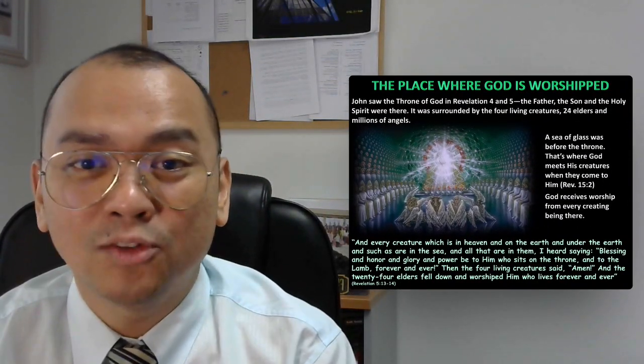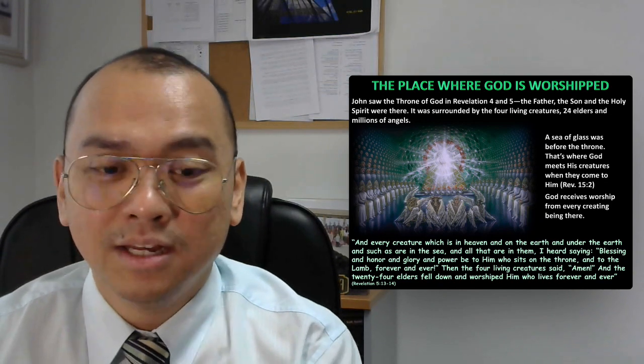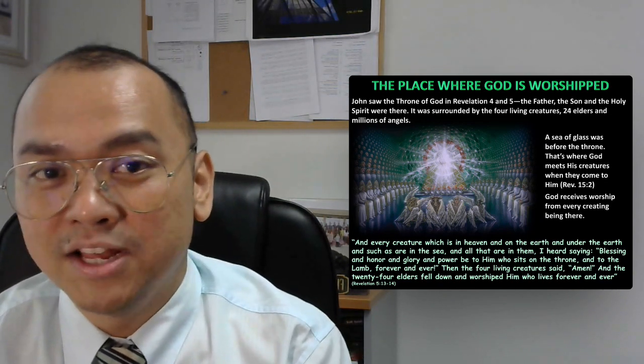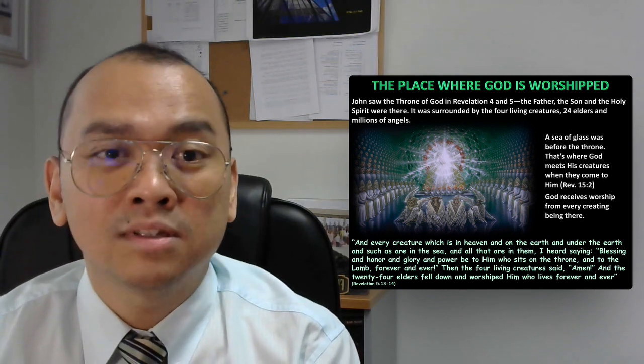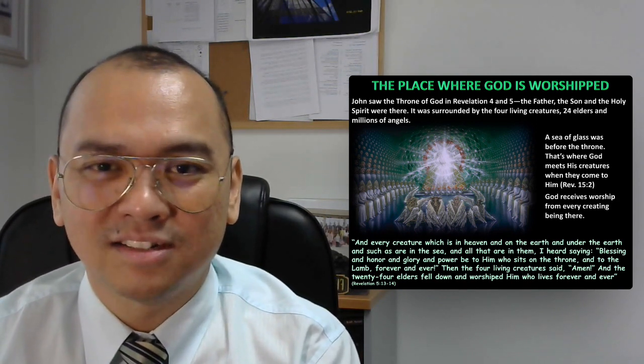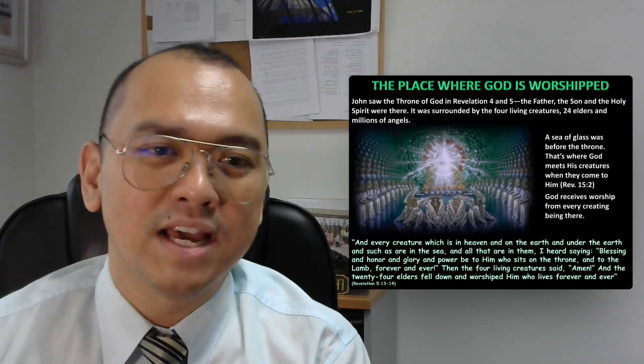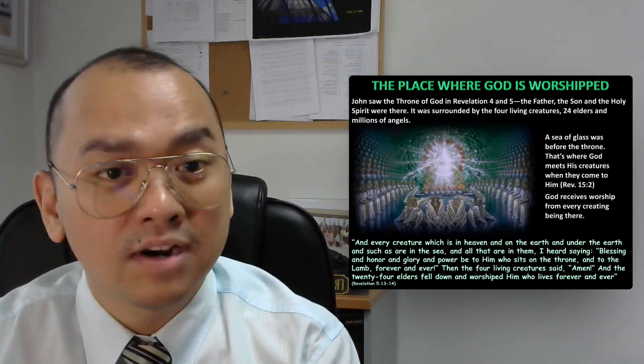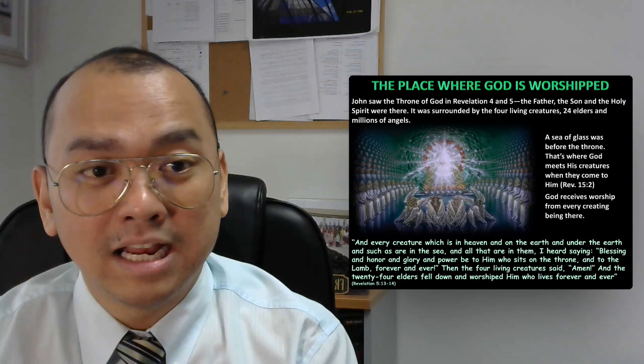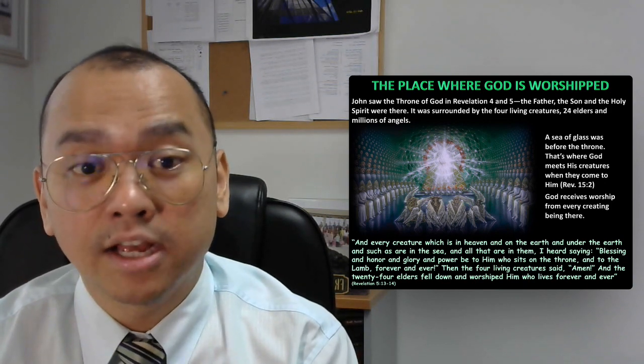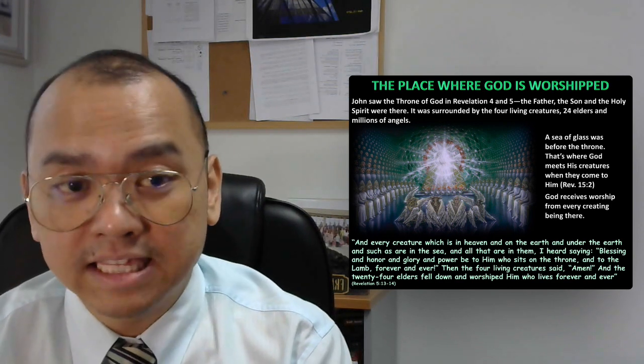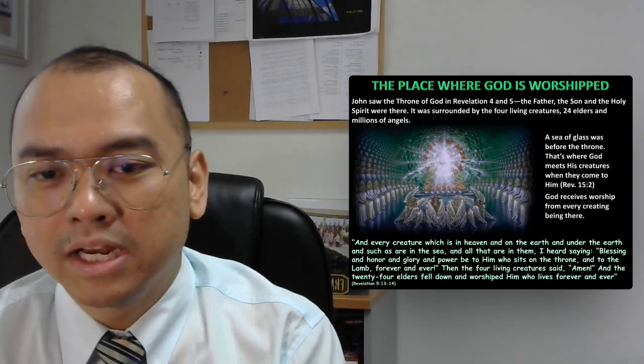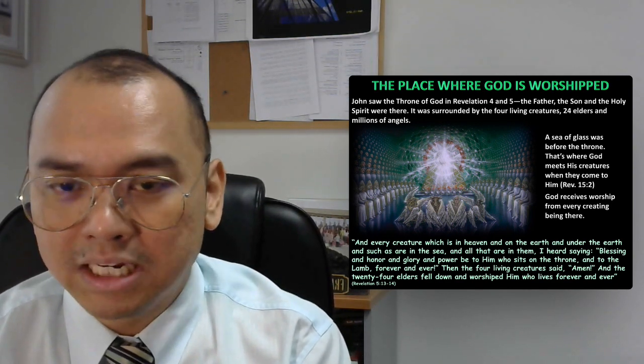The heavenly sanctuary is also the place where God is worshipped. John saw the throne of God in Revelation 4 and 5. The Father, the Son, and the Holy Spirit were there. It was surrounded by the four living creatures, the 24 elders and millions of angels. In Revelation 15, verse 2, we can see a sea of glass was before the throne. That's where God meets His creatures when they come to Him. And God receives worship from every creating being.